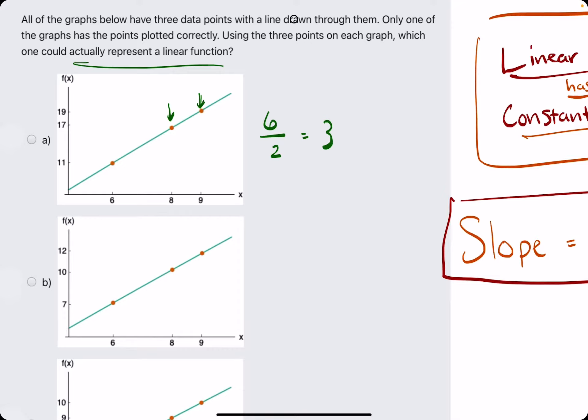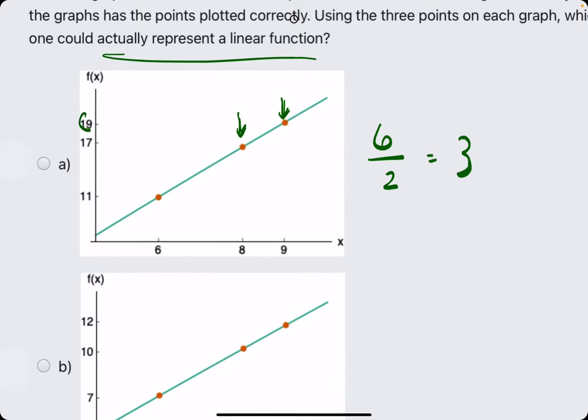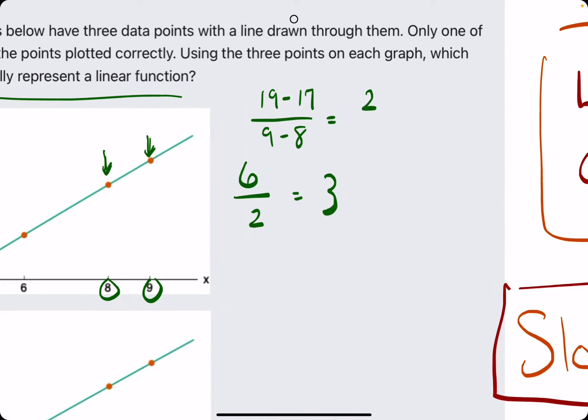So let's do y2 minus y1. So the y2 minus the y1 would be 19 minus 17, divided by x2 minus x1. So 19 minus 17 is 2, 9 minus 8, 2 divided by 1 is 2.